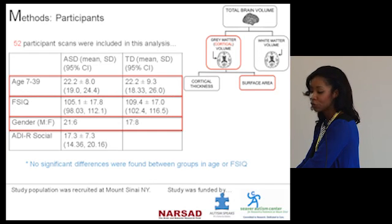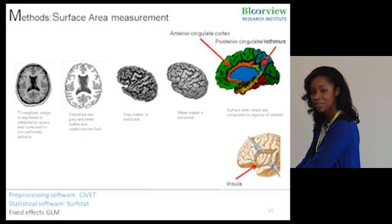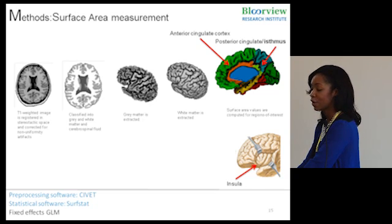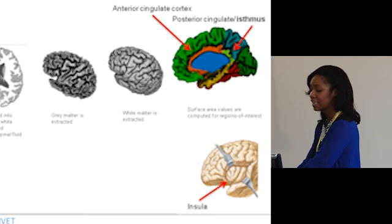In a very similar group of 52 participants — 27 with ASD and 25 controls — the age span was again 7 to 39, matched on age and full-scale IQ. The first four analysis steps were the same; the last step pulled out the surface area of eight regions of interest, as limited by the automated software. Because we were interested in social cognition, we paid close attention to three ROIs: the anterior cingulate in orange, the posterior cingulate in green, and the insula — all three implicated in social function.